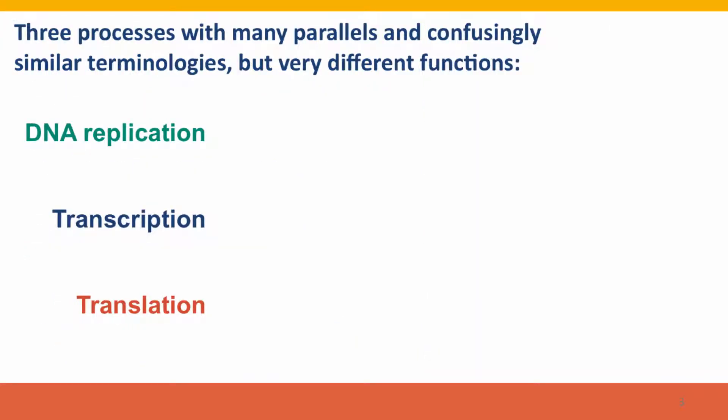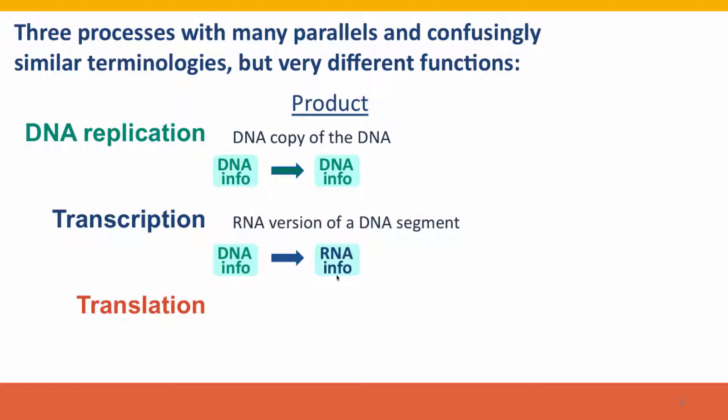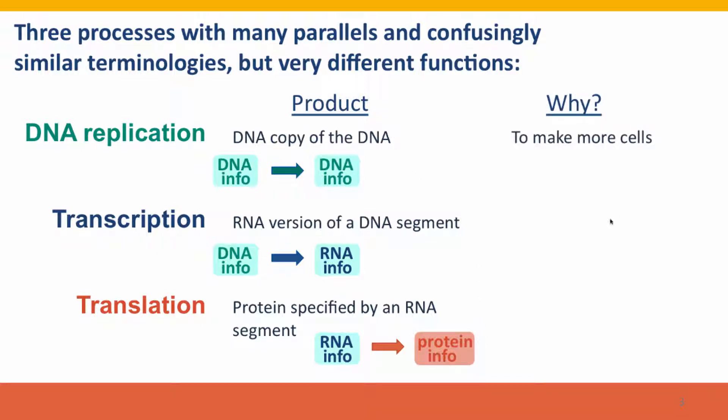Now we're talking about three processes, potentially confusing, but different in very important ways. DNA replication makes a DNA copy of the DNA. Transcription takes the DNA information and turns it into an RNA version with RNA information. Translation takes the information in RNA and turns it into the information in protein. DNA replication matters to make more cells. This is how heredity works, the fundamental process of heredity.